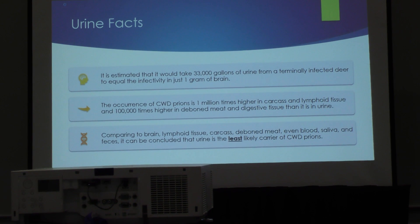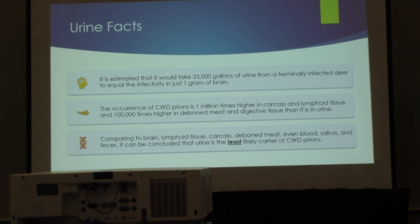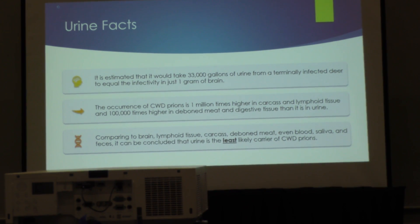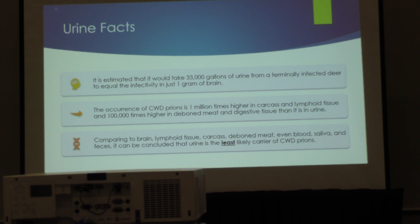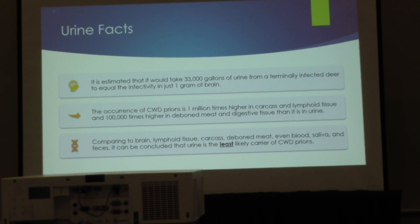Another important thing to consider is that CWD is not a homogenous disease across tissues. The brain has extremely high levels by the time the animal reaches clinical disease, while urine can have on the order of a million to ten million fold lower levels. A gram of brain can have 3,000 infectious doses for a deer by the oral route, where it may take far more urine given directly to a deer to cause infection. The ranking of tissue positivity has the brain at the highest, followed by lymphoid tissue where the disease replicates early.